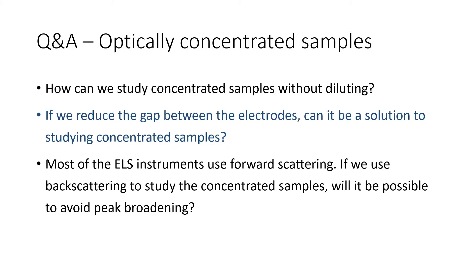Question: most of the ELS instruments use forward scattering. If we use backscattering to study concentrated samples, will it be possible to avoid peak broadening? Backscattering is used for particle sizing by dynamic light scattering. In backscattering mode, the instrument looks at light scattered from randomly moving particles close to the cuvette wall on the same face as the incident light. This means there is minimal chance of multiple scattering, the cause of peak broadening.